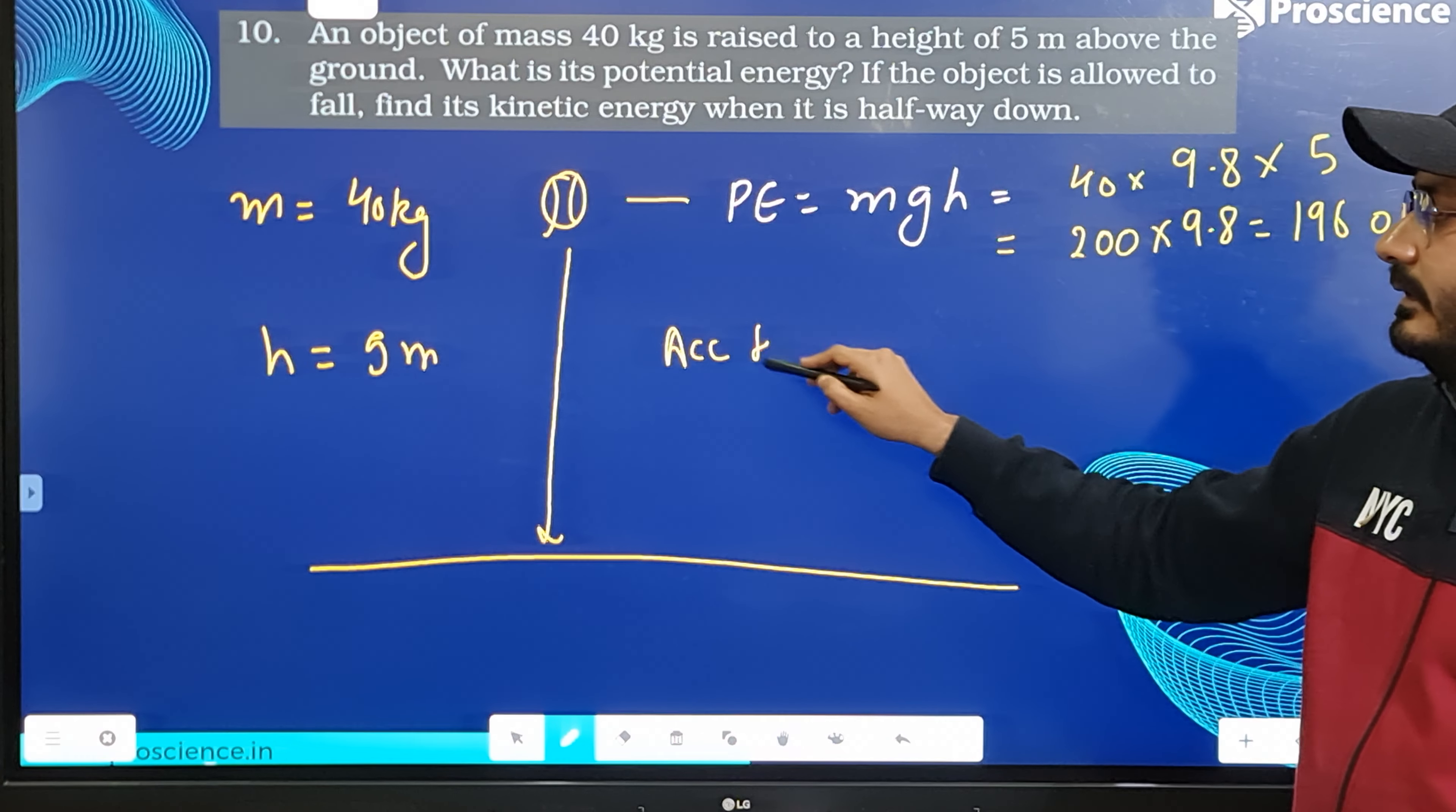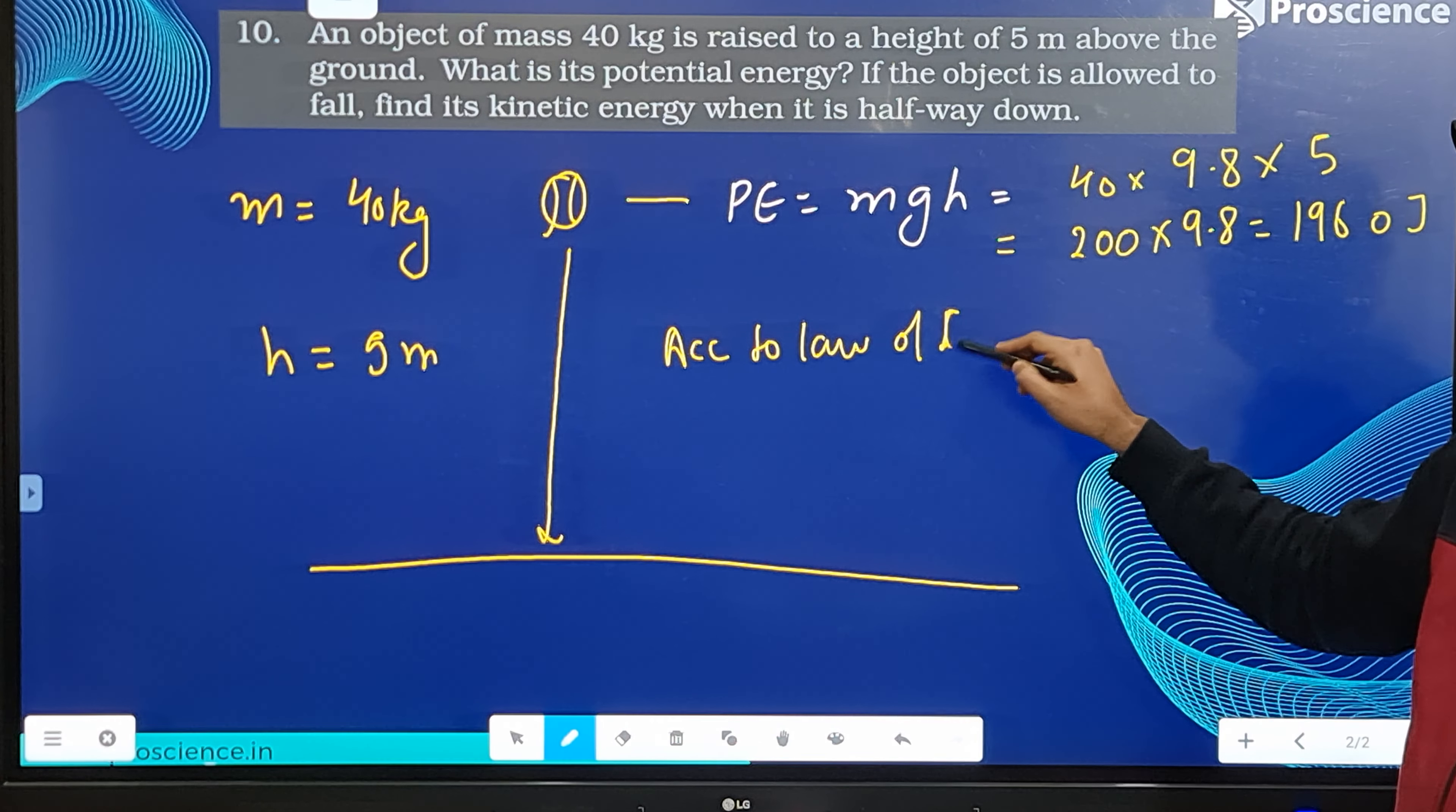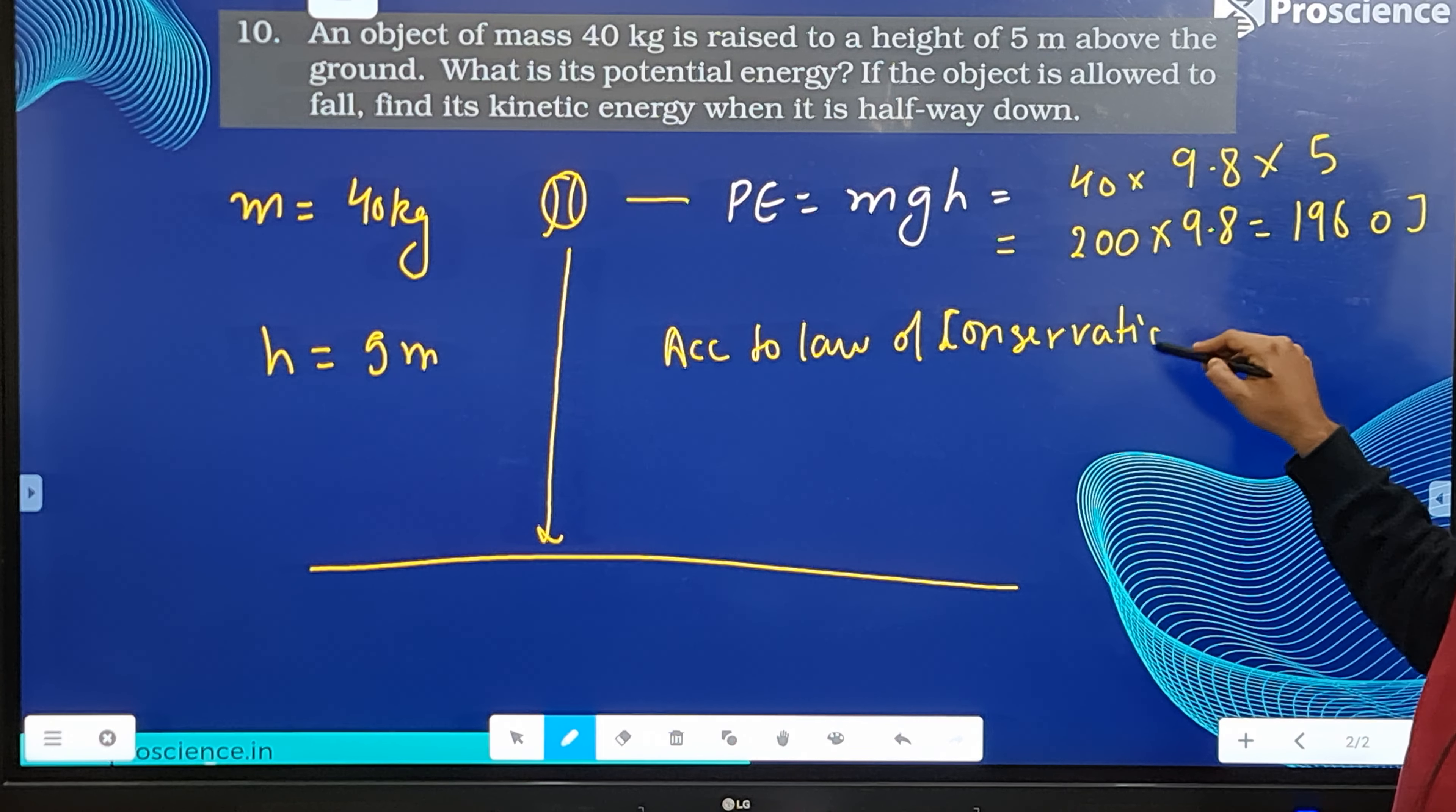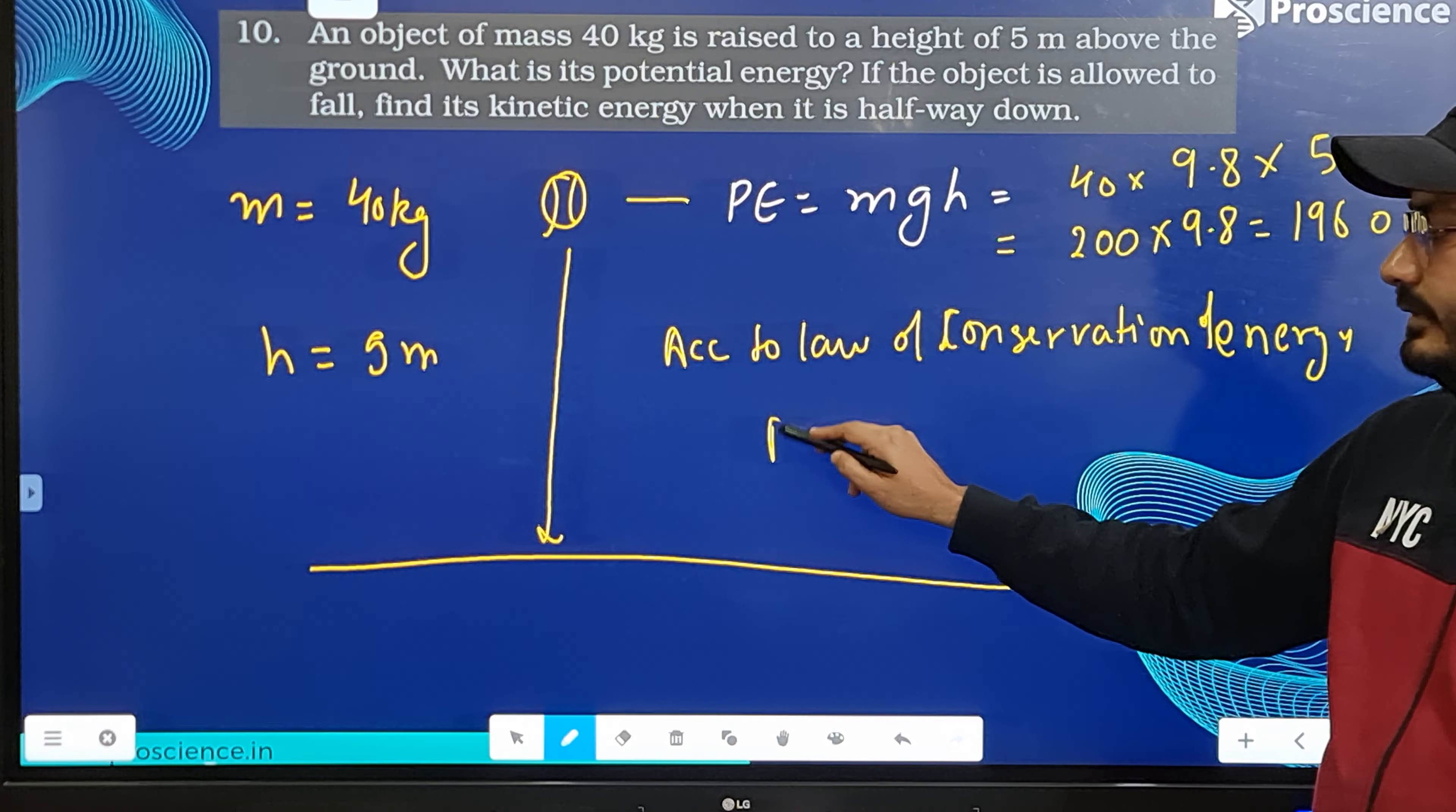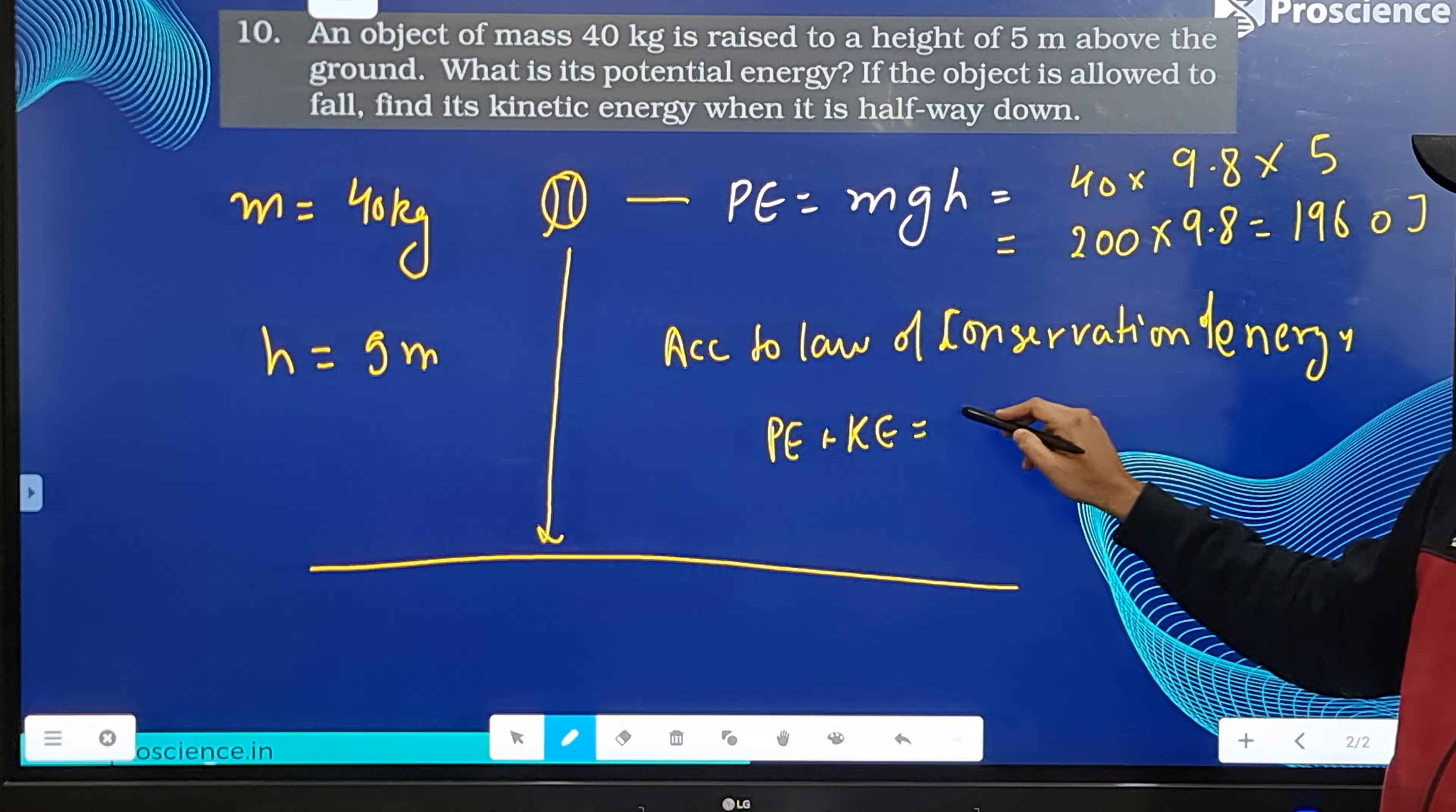According to law of conservation of energy, we know that total energy remains the same, so potential energy plus kinetic energy is equal to total energy, which is constant.